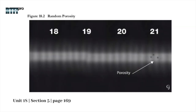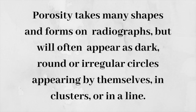Porosity is the result of gas entrapment in the solidifying metal. It is a void in the weld metal and will have a darker radiographic density than the surrounding areas. Porosity takes many shapes and forms on radiographs, but will often appear as dark, round, or irregular circles, appearing by themselves, or in clusters, or in a line.